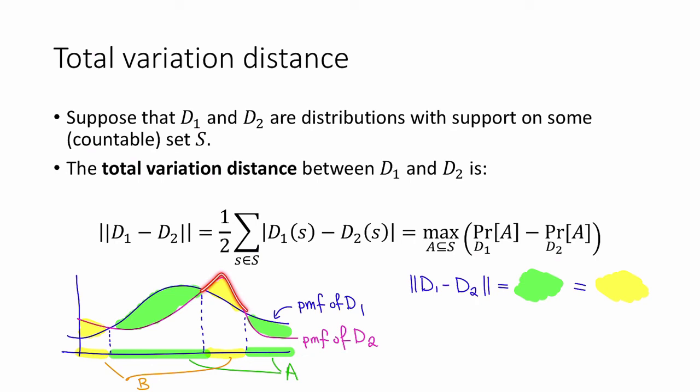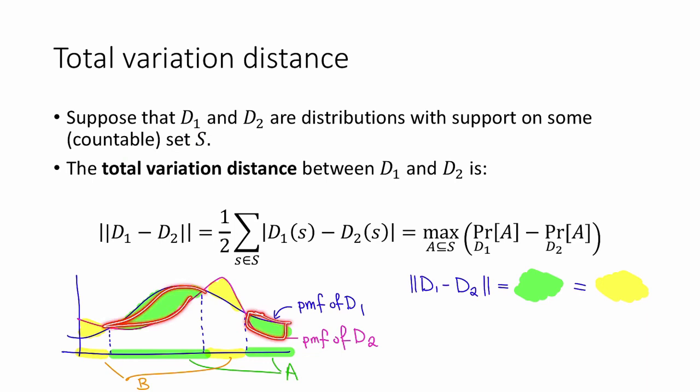One way to see that is that the green area plus the yellow area is equal to the sum without the one half, and then the green area is half of it and the yellow area is also half of it by symmetry. This green area is also easily seen to be the probability under d1 of the set A minus the probability under d2 of the set A. So this set A turns out to be the set that attains the maximum. If you haven't seen this before, it's a good exercise to stare at these two definitions and convince yourself that they're the same.